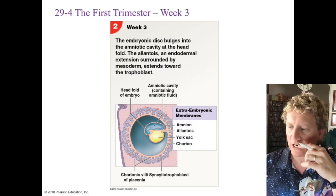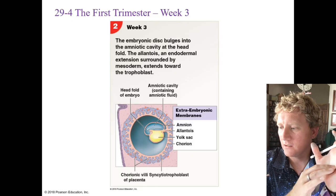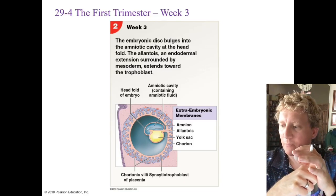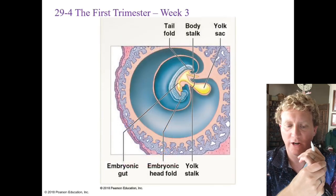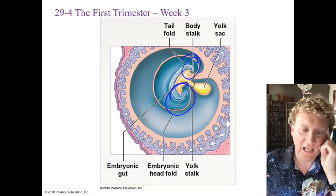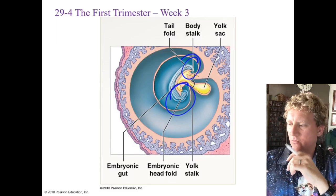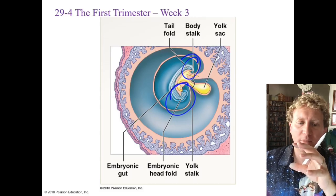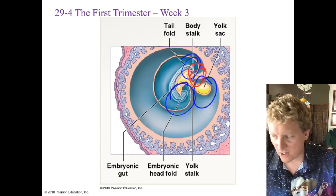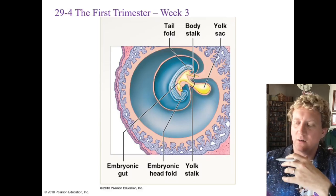Moving into week three, we have the formation of the allantois, which begins as an outpocket of the yolk sac. The base of that sac eventually turns into the urinary bladder. About a week later, the embryo has a definite head and tail from the head fold and tail fold. The connection between baby and mother narrows, and the yolk sac persists. That narrowing eventually becomes the umbilical cord, allowing exchange between mama and baby through the placenta.